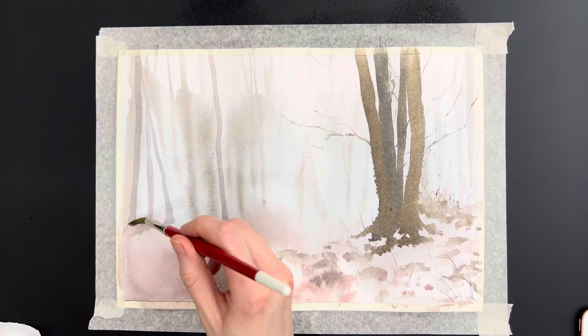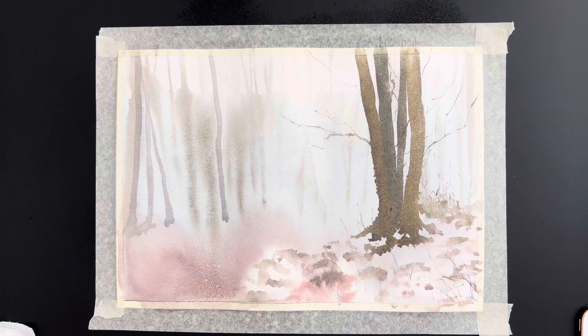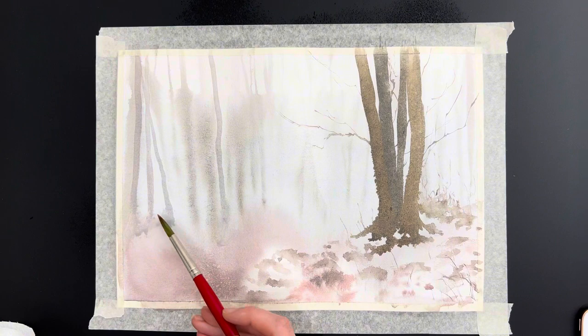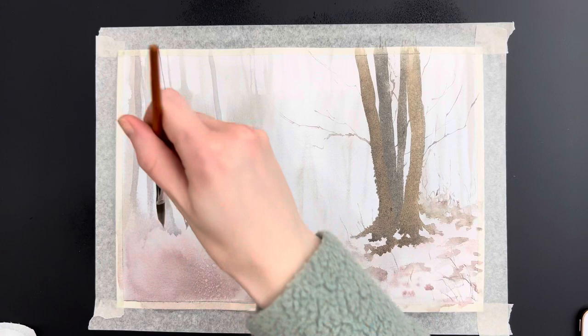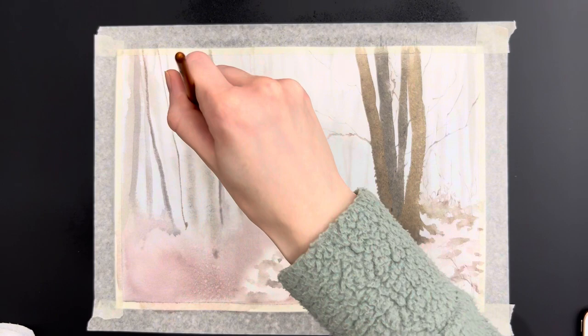I'm just going to blend the base of those trees just to make them look less harsh there. As you can see I'm using the spray bottle again which is very useful if you want to target the water and not have to put your brush there and accidentally swipe over it and ruin what you've done. You can just use the spray bottle to mist in that specific area which is really useful.